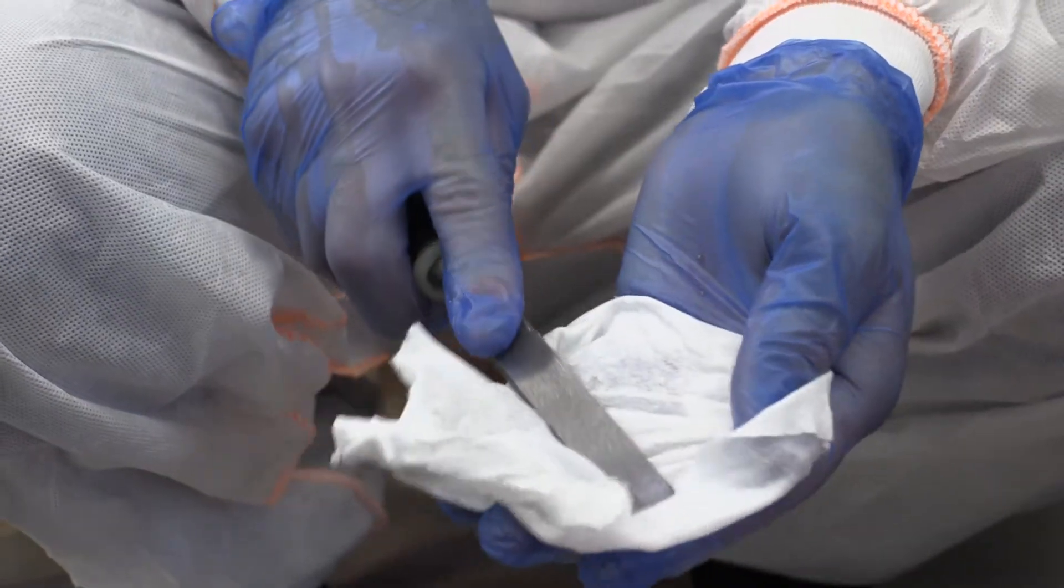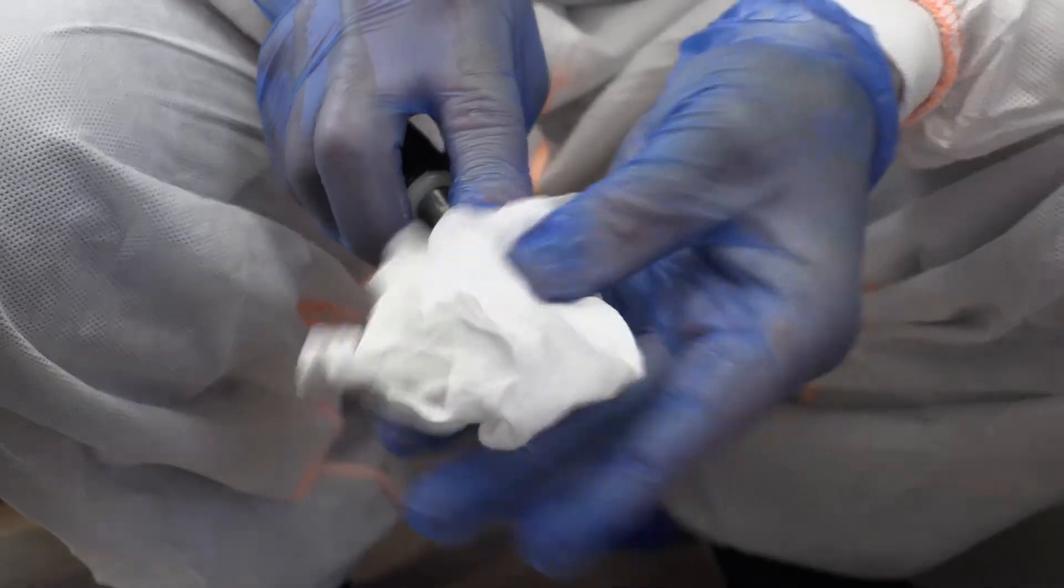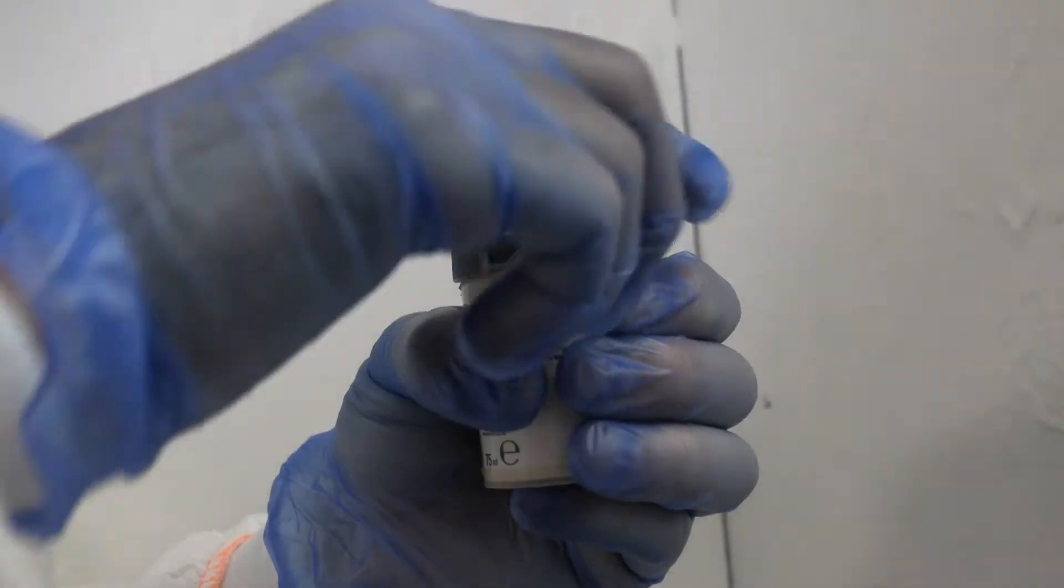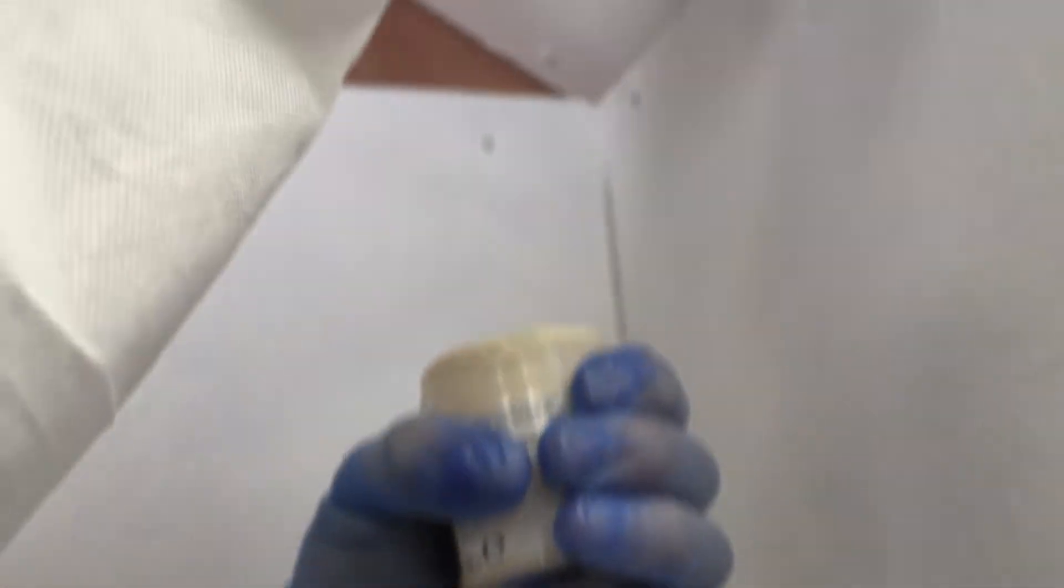Ensure the sampling tool is thoroughly decontaminated with wet wipes following sampling. Any waste generated from the sampling should be treated as asbestos waste and placed in the red asbestos waste sack. Finally, seal your sample points with a suitable paint or tape.